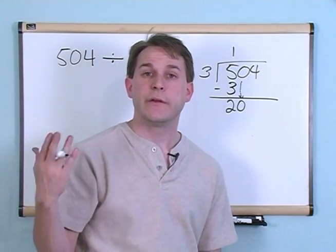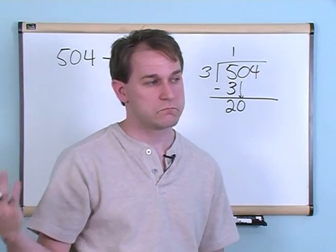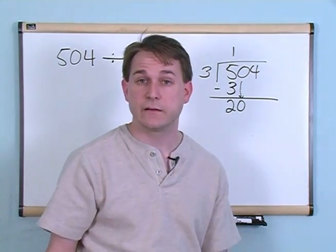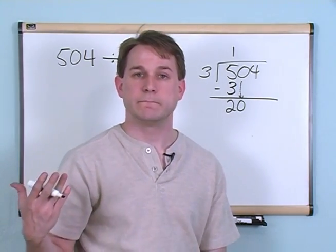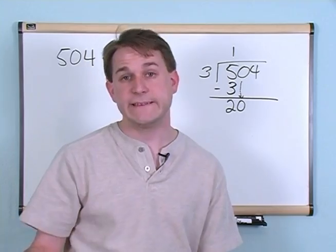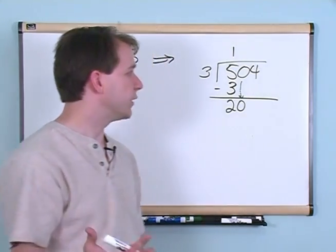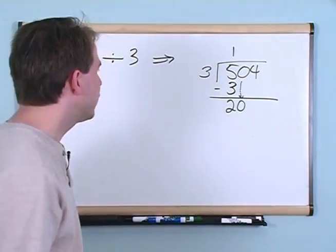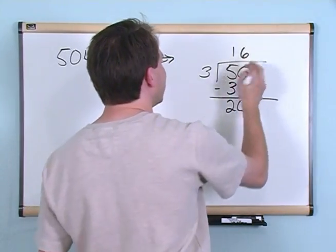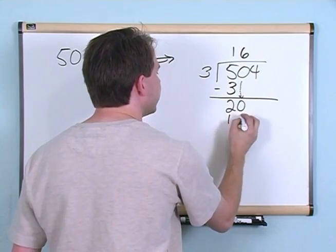I can do that because 20 is bigger than 3. How many times will it go? 3 times 5 is 15. Getting closer. 3 times 6 is 18. We're getting pretty close. And 3 times 7 is 21, and that's too big. You can't use that. So let's go back to 3 times 6, giving us 18.